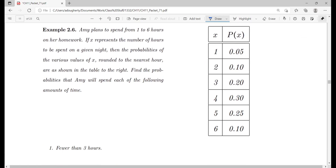What about here? Amy plans to spend somewhere from 1 to 6 hours on her homework. If x is the number of hours she spends on a night, rounded to the nearest hour, what's the probability she spends 1, 2, 3, 4, 5, or 6 hours on her homework? The probabilities are given here. And you'll notice that the sum is equal to 1. In other words, she's going to spend some amount of time on her homework. There is a 0% chance that she doesn't touch her homework at all.